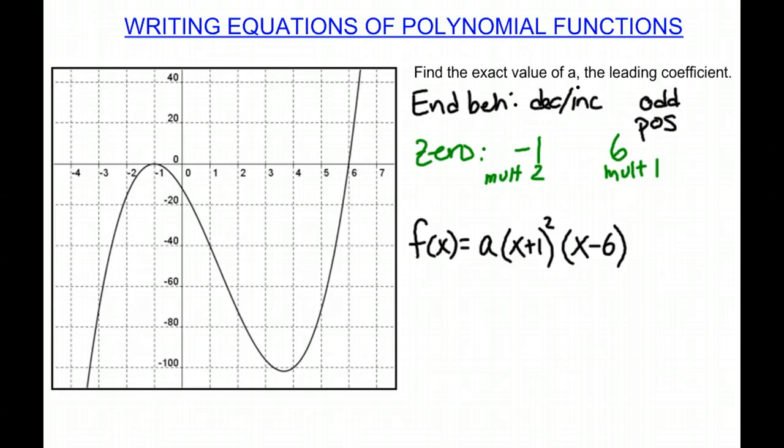So now to find the a, I'm actually going to look on the graph and pick a point. I see this nice point here, which is 1, negative 40. Then I'm going to use that value to find a. So I know negative 40 is my y, I don't know a, and my x is 1.